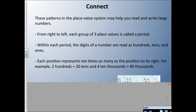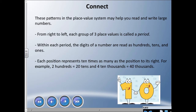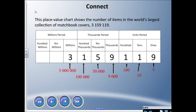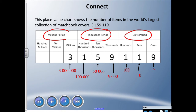Here's a place value chart showing the number of items in the world's largest collection of matchbook covers, and that number is three million one hundred fifty-nine thousand one hundred nineteen. As you can see, we have a units period, a thousands period, and a millions period — one, two, three digits in each period.